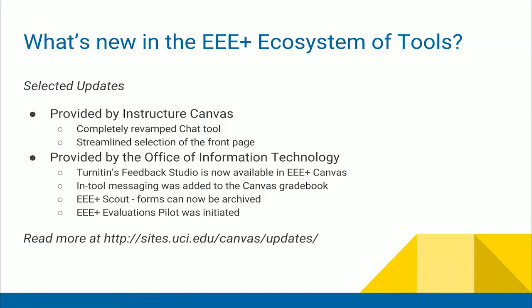One thing you'll find in this new ecosystem is that things are continually improving. Not only is the OIT team updating and maintaining tools, but Instructure also releases updates. The team frequently posts updates on the Canvas transition site explaining what's new — reviewing all documentation and translating it into understandable language for instructors so they know what changes actually mean for them.